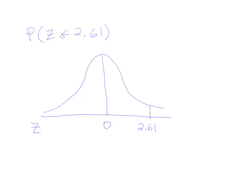Remember, this is saying that z is less than 2.61, so the values that are less than 2.61 are all to the left. So we're looking for all of this area, right? All the way across, all the way down.